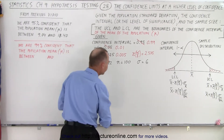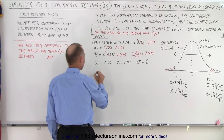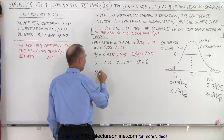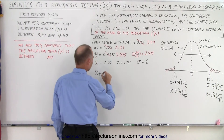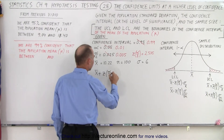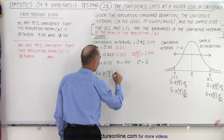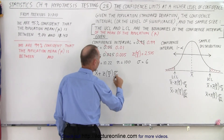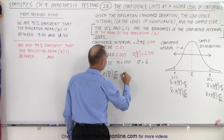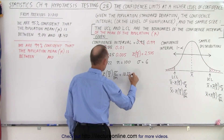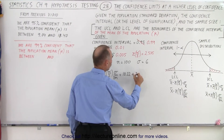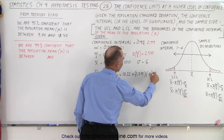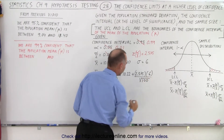First, we take the sample mean and add to that the maximum error. The error is the z-score at the half level of significance multiplied by the standard deviation of the population divided by the square root of the sample size. So that will be 10.22 plus 2.575 multiplied by 6 divided by the square root of 100.